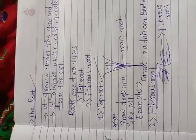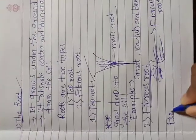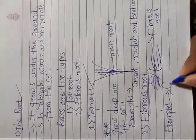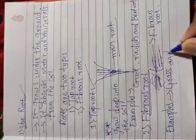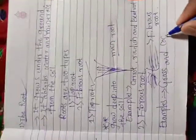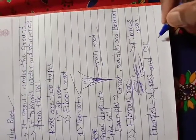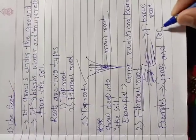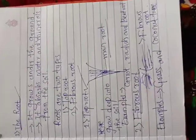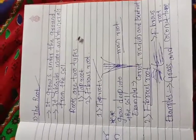Fibrous root has only a bunch of small roots; it does not have any main root and does not grow deep into the soil. Examples of fibrous roots are grass and coconut tree. The coconut tree roots do not have any main root — they have only bunches of small roots. So these are the two main important types of roots.